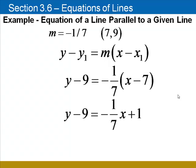Distribute through the negative 1/7, and finish by adding 9 to both sides. The equation is y equals negative 1/7 x plus 10.